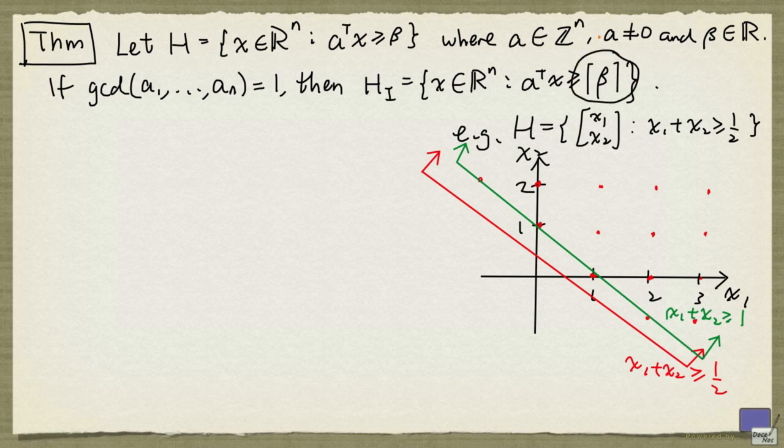So what this theorem says is that the integer hull of H is going to be defined by this inequality here. So recall that the ceiling function of a real number denotes the least integer at least that number. So the least integer at least 1/2 is 1.